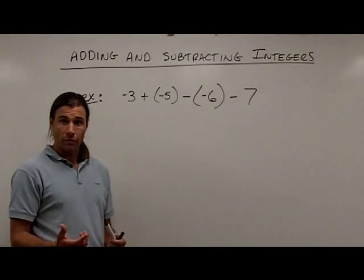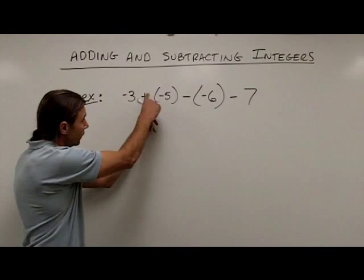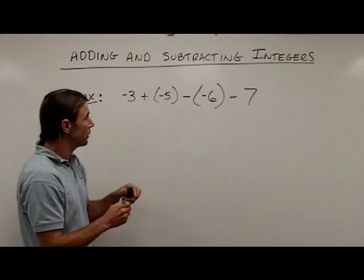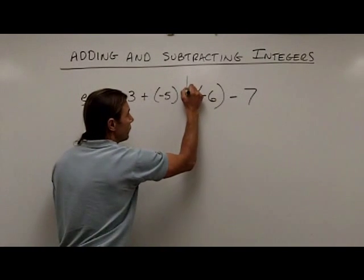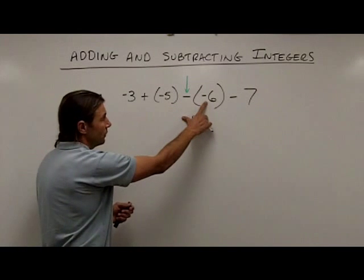So first, let's identify the places where we have subtraction. This is an addition problem. This is negative 3 plus negative 5. That's an addition problem. Here, however, we have a subtraction problem. So here's one of the places I need to make a change. This is a negative 5 minus a negative 6.